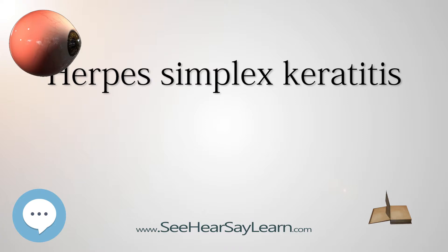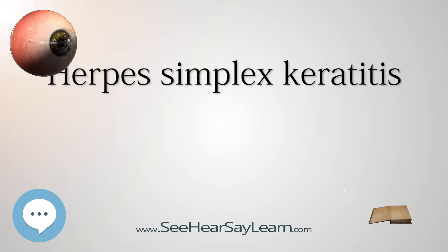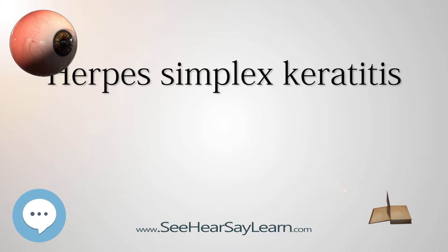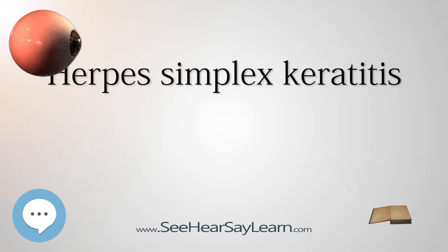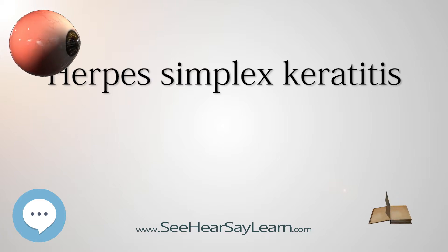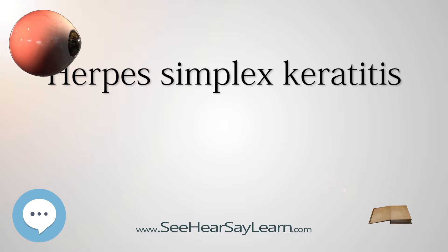The following classification of herpes simplex keratitis is important for understanding this disease. Dendritic ulcer — epithelial keratitis: This classic herpetic lesion consists of a linear branching corneal ulcer. During eye exam, the defect is examined after staining with fluorescein dye. Patients complain of foreign body sensation, light sensitivity, redness, and blurred vision. In immune-deficient patients or with the use of corticosteroids, the ulcer may become large — called a geographic ulcer.